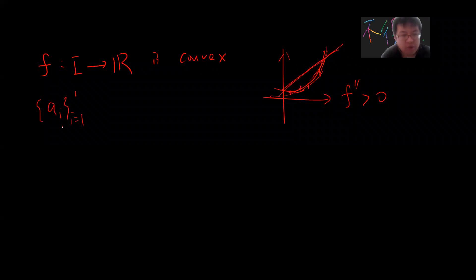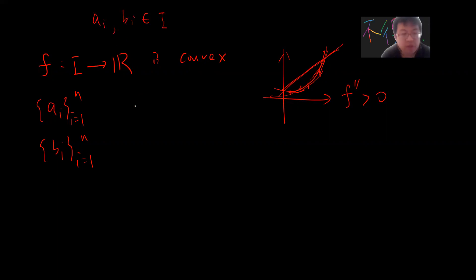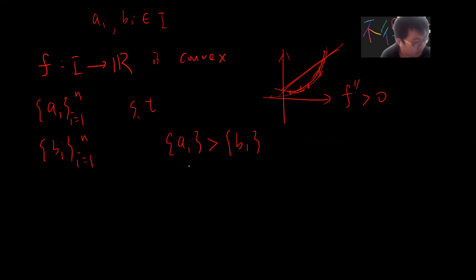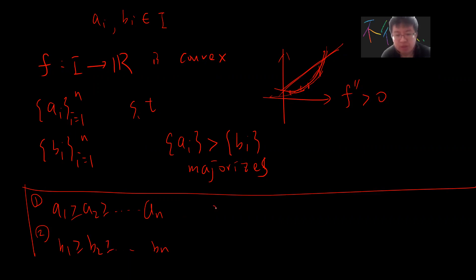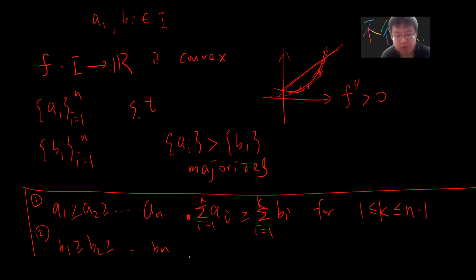Now we have some numbers: a_i for i from 1 to n, and b_i for i from 1 to n. All these a_i and b_i belong to our interval. We say the a sequence majorizes the b sequence. The first condition is that a_1 ≥ a_2 ≥ ... ≥ a_n and b_1 ≥ b_2 ≥ ... ≥ b_n. Majorization means the sum of a_i for i from 1 to k is greater than or equal to the sum of b_i for i from 1 to k, for k from 1 to n−1.